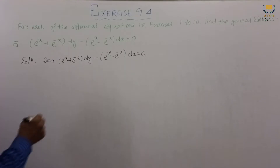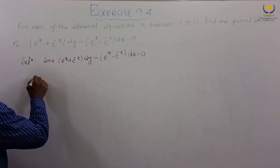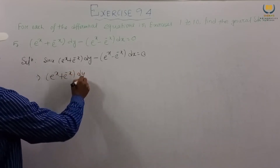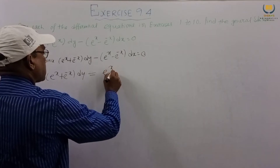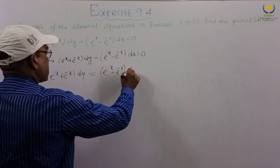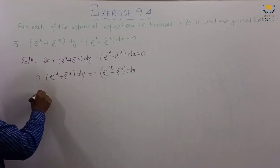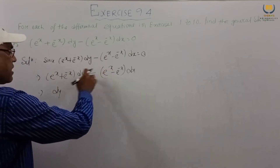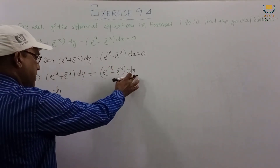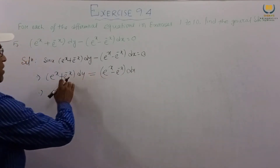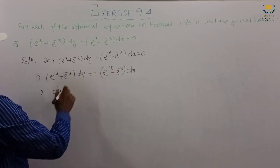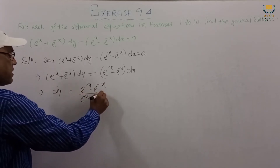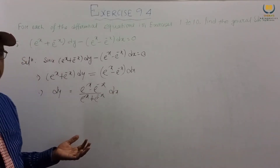This is given. Taking the dx term to the right-hand side, we get (e^x + e^-x)dy equals (e^x minus e^-x)dx. This implies dy equals (e^x minus e^-x) divided by (e^x + e^-x) dx, dividing both sides by (e^x + e^-x). This gives us complete separation of variables — dy is on one side, and dx with x terms on the other.